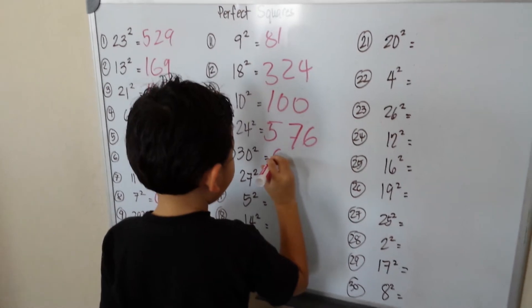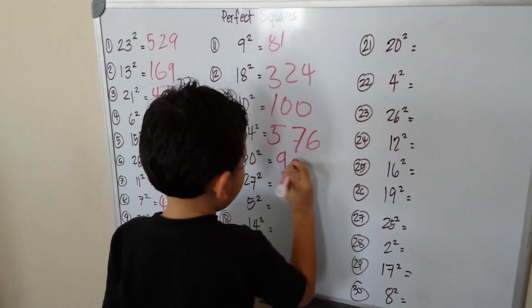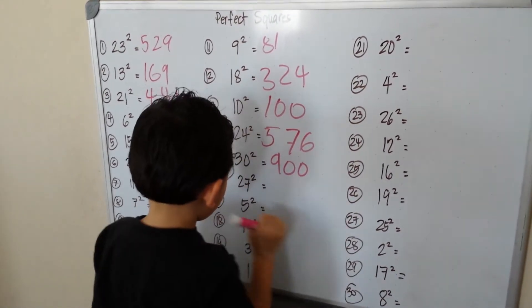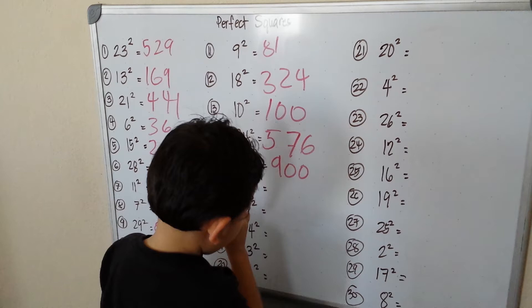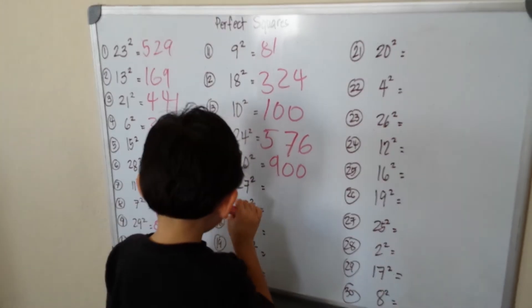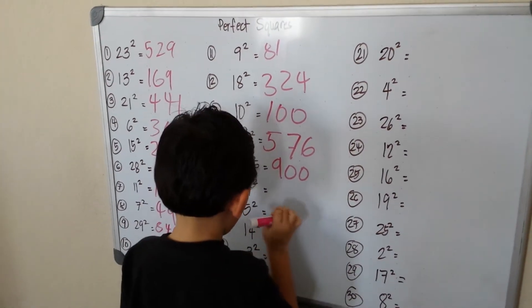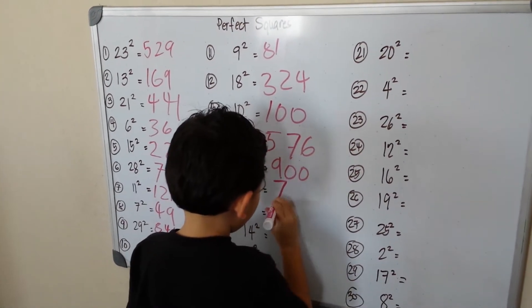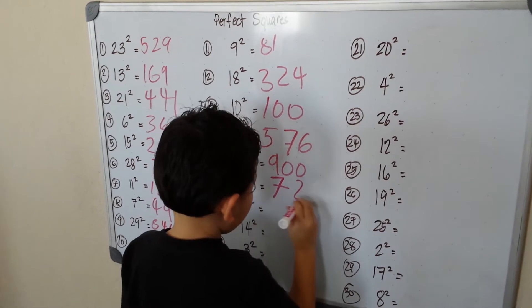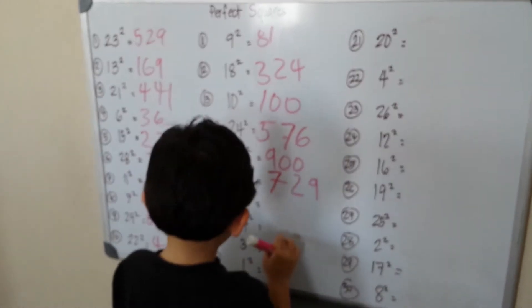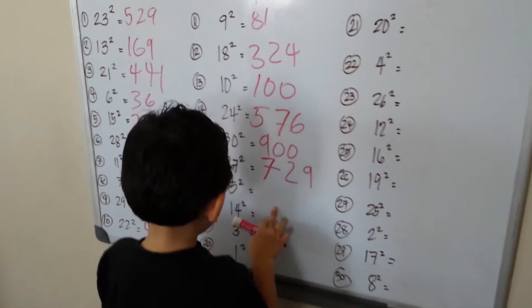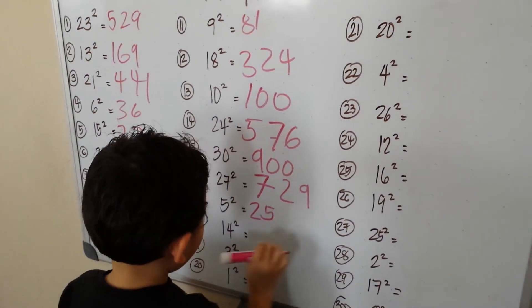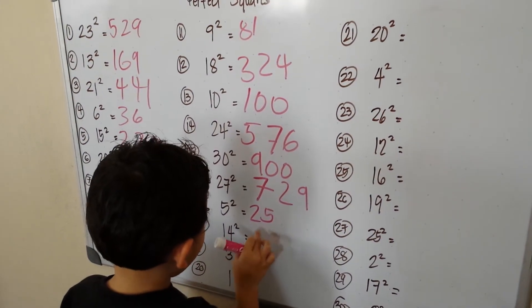Okay, so 30 squared is 900. 27 squared — I will look back — oh, it's 729. 5 squared is 25.